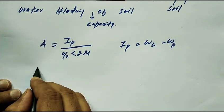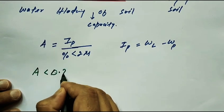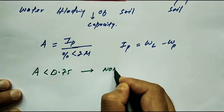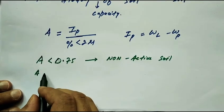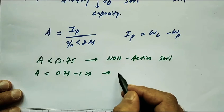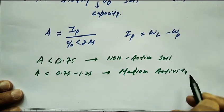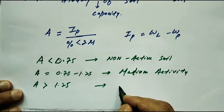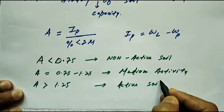If activity of soil is less than 0.75, then the soil is called non-active soil. Secondly, if activity is between 0.75 and 1.25, then the soil is called medium activity. Thirdly, if activity is greater than 1.25, then the soil is called active soil.